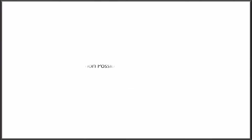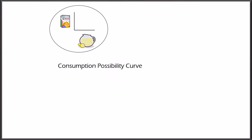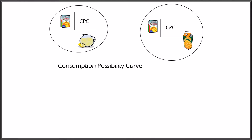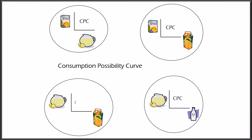Now let's see how these concepts can be represented in graphs. We can show the different combinations of products that can be acquired by drawing the consumption possibility curve, or CPC. The CPC focuses on choices between two products only. Note that this approach can also be referred to as the consumption possibility line, boundary, frontier, or schedule. The typical consumption possibility curve is drawn using two types of data.